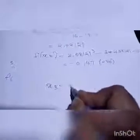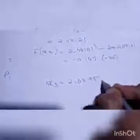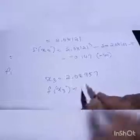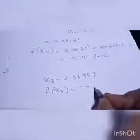So same way when we continue, we will get x3 as 2.08957 and f(x3) as negative 0.055. So this we get for x3.